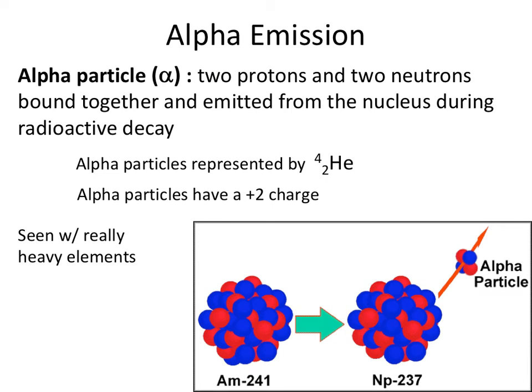Alpha particles are actually two protons and two neutrons that become bound together and leave a nucleus during an alpha particle decay process. Alpha particles are represented by this symbol here, and they actually have a plus two charge. The reason why is because they have two protons but don't have any electrons. This type of decay process is seen with really heavy elements or heavier elements.